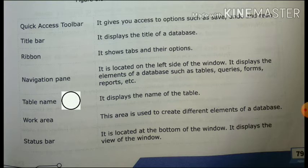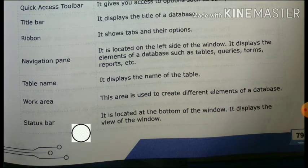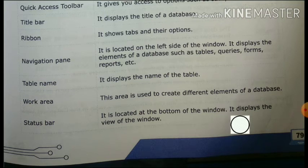Table Name — displays the name of the table. Work Area — the area used to create different elements of a database. Status Bar — located at the bottom of the window, it displays the current view of the window.